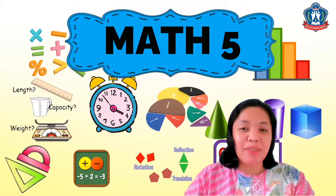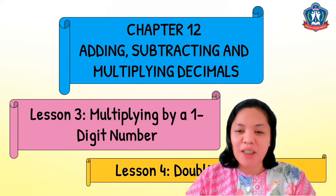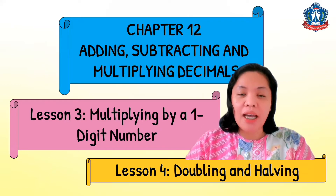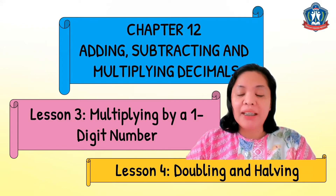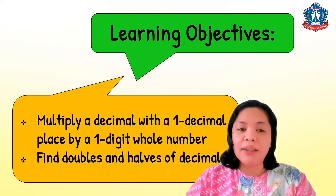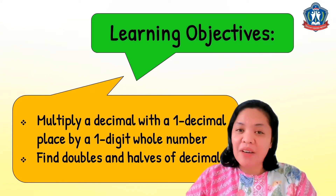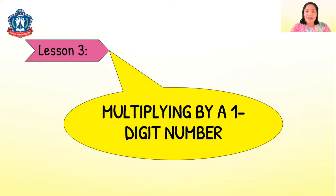Hi P5 students, this is Miss Claire and welcome again to our Math 5 class. In this video we will continue our lesson for Chapter 12. You will learn Lesson 3: Multiplying a Decimal Number by a One-Digit Number, and Lesson 4: Doubling and Halving. The learning objectives are to multiply a decimal with one decimal place by a one-digit whole number, and to find doubles and halves of decimals.